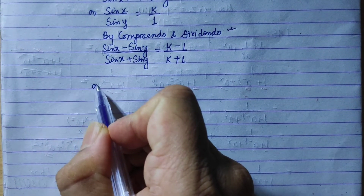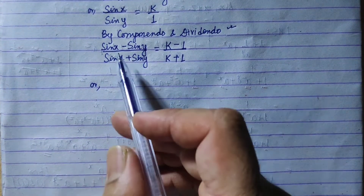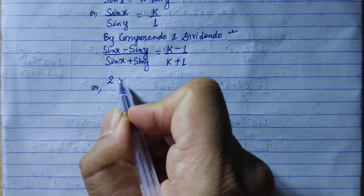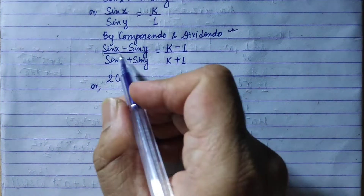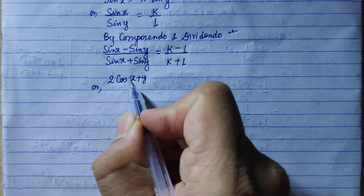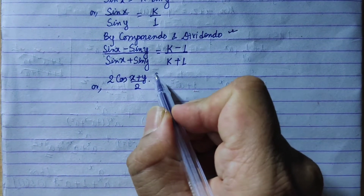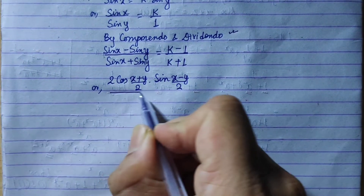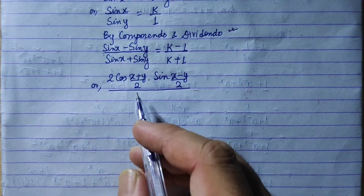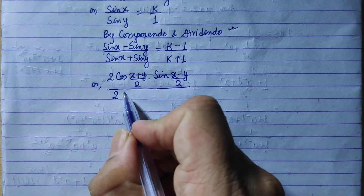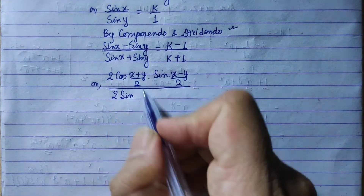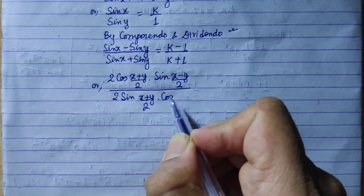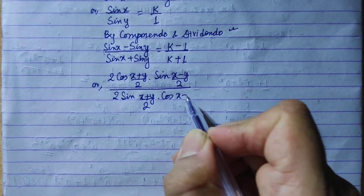Let's see the transformation of trigonometric formula. Now, sin C minus sin D equals 2 cos of (C plus D) by 2 into sin of (C minus D) by 2. And sin C plus sin D equals 2 sin of (C plus D) by 2 into cos of (C minus D) by 2.